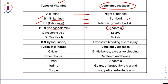Vitamin D deficiency leads to rickets — weakening of bones, very fragile bones, and decay of teeth. Vitamin K deficiency causes excessive bleeding due to injury and inability to form blood clots, meaning the blood does not clot and there is excessive bleeding.